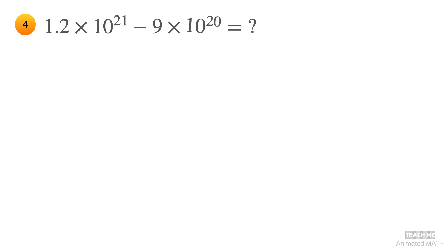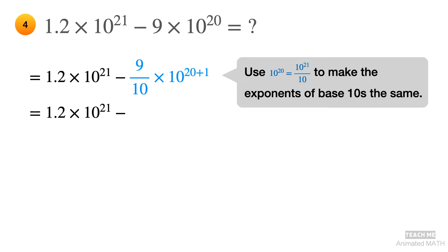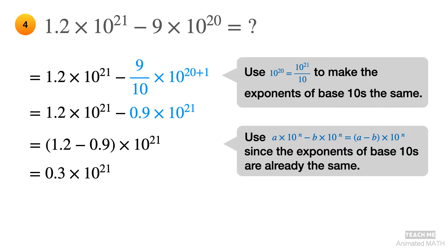Once again, you cannot immediately subtract 1.2 and 9 because the powers of 10 are not the same. This is very similar to the previous example. The first step is to make the exponents of 10 the same. The smaller number is 9 times 10 to the 20th power. Let's add 1 to 20 so that the exponent becomes 21. Since you increase the exponent by 1, you have to divide 9 by 10. You can now subtract 0.9 from 1.2 since both scientific notations have a multiplier of 10 to the 21st power.